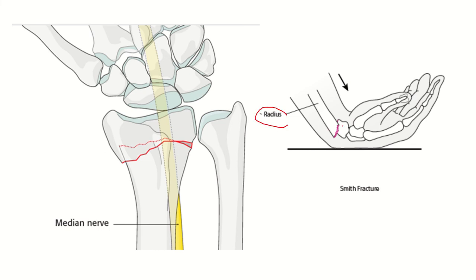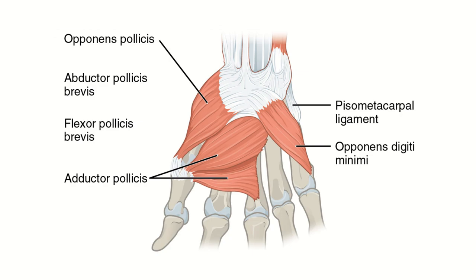Smith fracture is a fracture of the radius where the distal fragment is displaced posteriorly. We can see here that the median nerve runs close to the radius, and during this type of fracture it may get injured. Now let's look at the opponens pollicis muscle, which is responsible for opposition of the thumb.